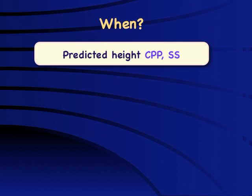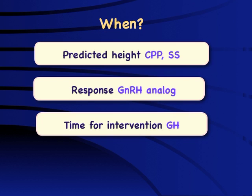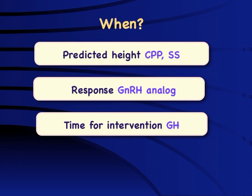Be it an individual who comes with short stature and parents want to know how much growth is left — looking into predicted height in cases like precocious puberty or short stature — evaluation for response to therapy, particularly GnRH analog therapy in the setting of a precocious puberty child, to look at how GnRH analogs have halted the progression of bone age, to determine time for intervention such as growth hormone therapy, and to decide how long to continue growth-improving therapies. So pretty much any child with a pediatric endocrine disorder would require bone age assessment at some point.